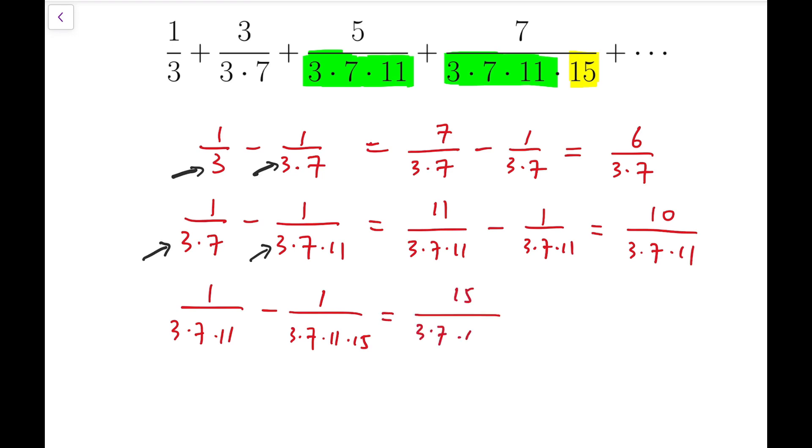And the difference equals 10 over 3 times 7 times 11. Well, for the third subtraction, I'll get 14 over 3 times 7 times 11 times 15.